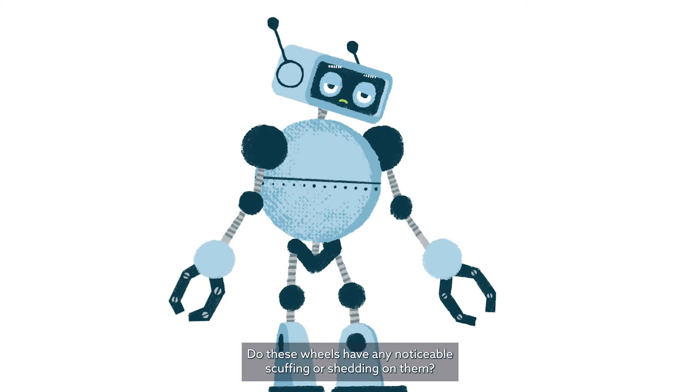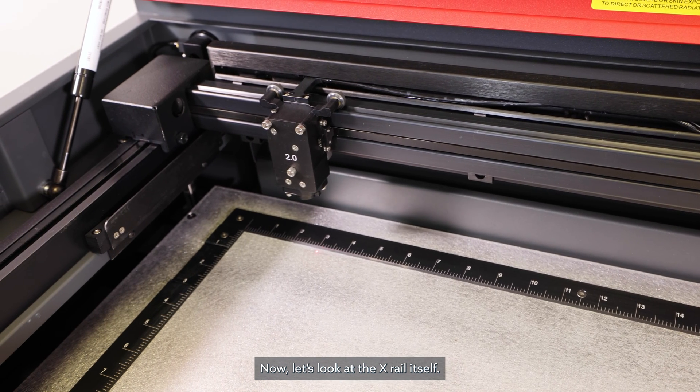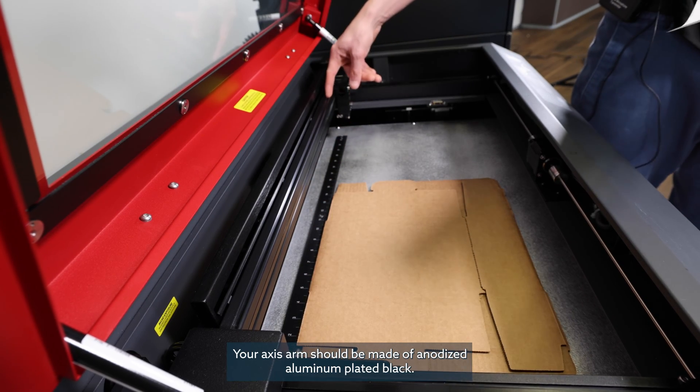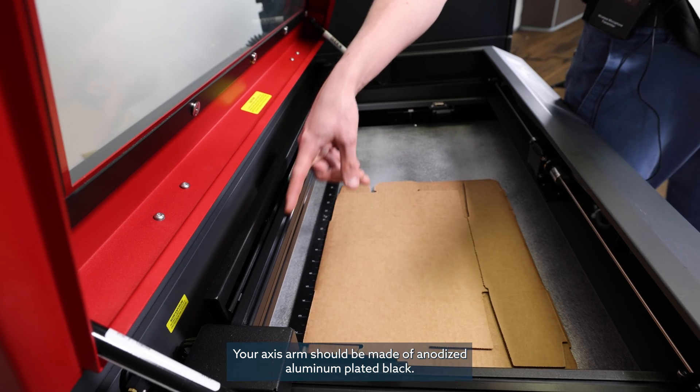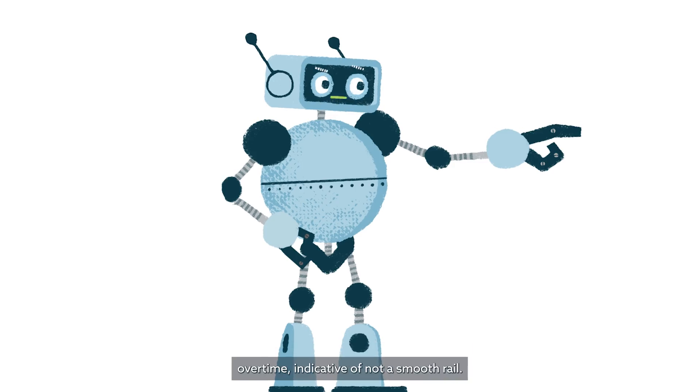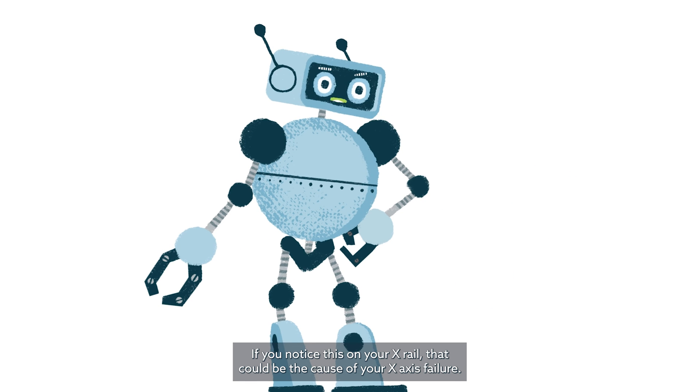Now let's look at the x-rail itself. This is where those wheel bearings ride on. Your axis arms should be made of anodized aluminum painted black. However, this rail line can become scuffed and discolored over time, indicative of a not-smooth rail. If you notice this on your x-rail, this also could be the cause of your x-axis failure.